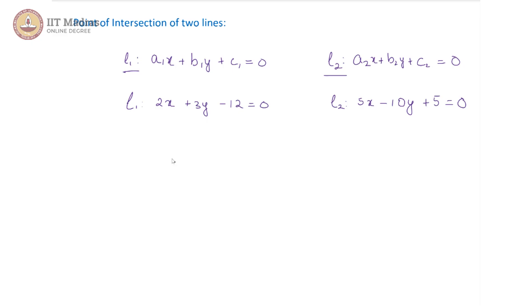The best thing to do is to eliminate one variable, either x or y, and get a single equation in the other variable. This can be done in two ways. One way is called substitution. In substitution, in order to remove one variable, we basically express the other in terms of it. For example, if I wanted to eliminate the y variable, what I do is express x in terms of y.